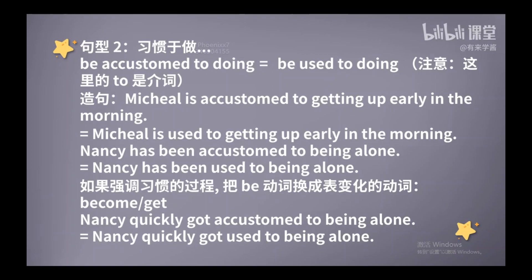好，小结一下。当你要表达习惯做一件事情的时候，我们可以说be accustomed to something or doing something，这里的accustomed也可以换成used。如果我们要强调习惯一件事的过程，那就可以说get accustomed to something or doing something，或者说become accustomed to something or doing something.